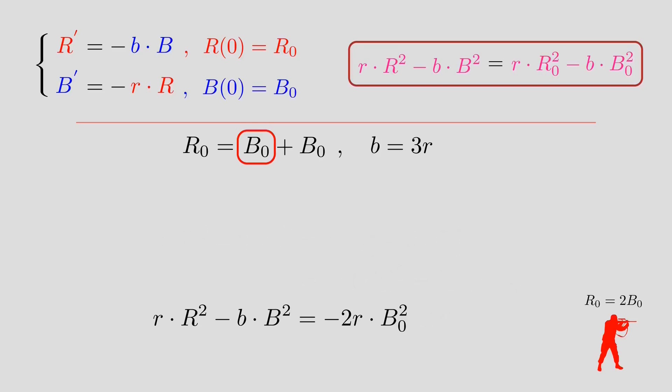And to find the number of soldiers that remain after phase one, we plug in R equals zero and solve for B. And we will find B_1, which is the remaining blue forces.